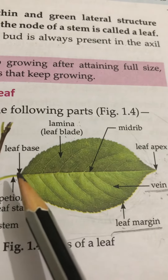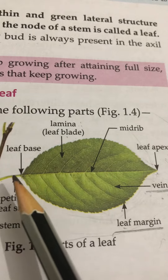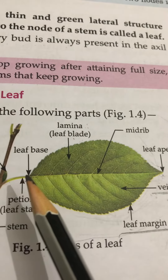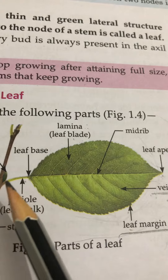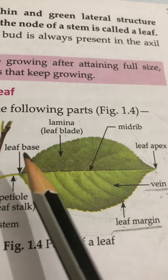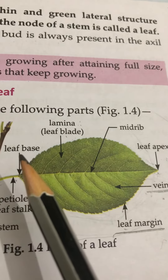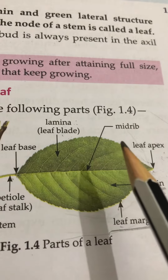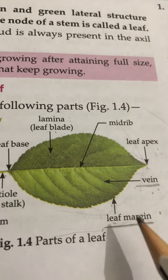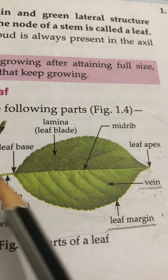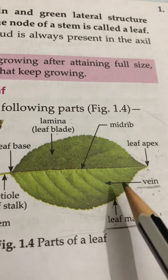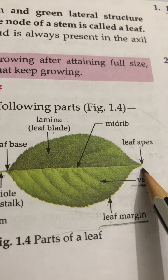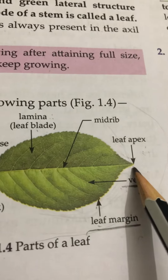The point where the leaf is attached to the branch is called the leaf base. The outer margin of a leaf is called the leaf margin. The tip of the leaf is called the leaf apex.